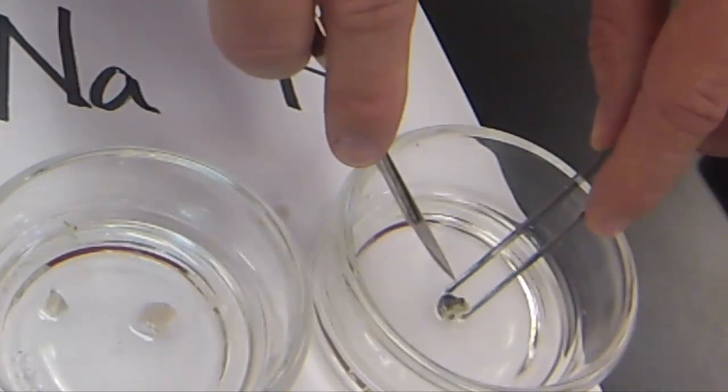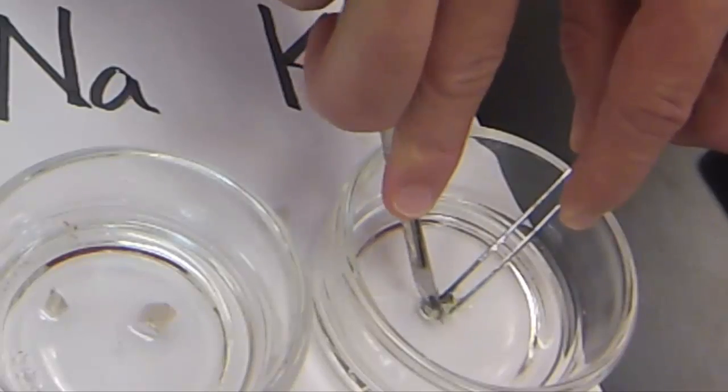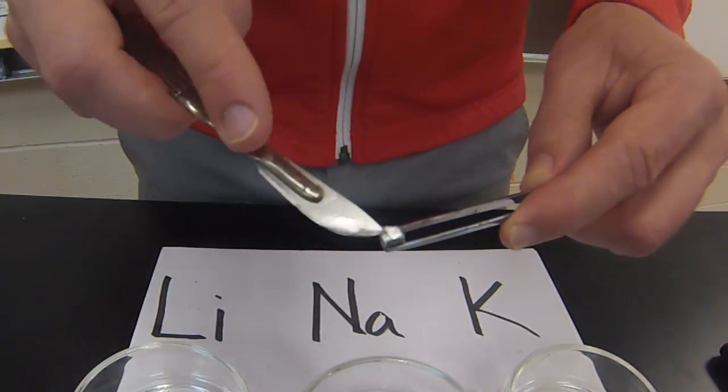I expect potassium to be even softer than those two. As I cut through potassium, it's very easy to cut through, and if I look inside, once again we have that same shiny color. So the physical properties of these three elements are similar.